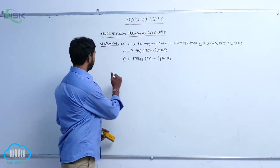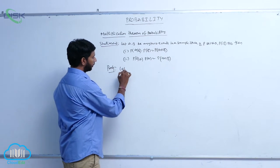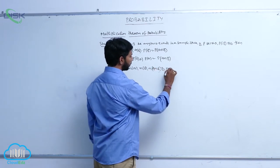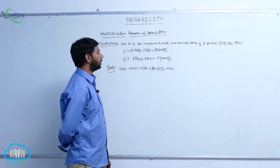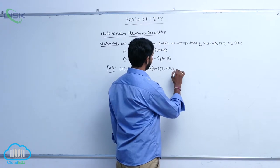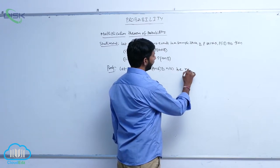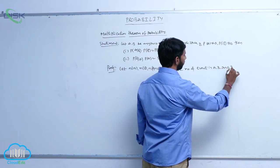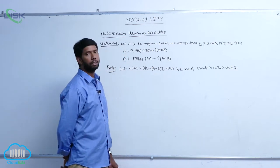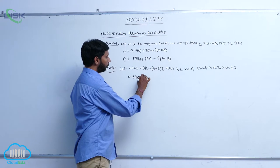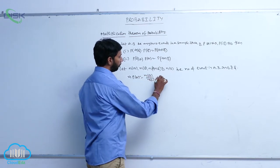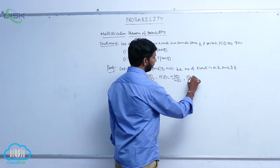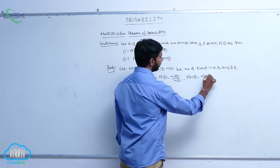Proof: Let N of A, N of B, N of A intersection B, and N of S represent the number of events in A, B, A intersection B, and S respectively. That implies P of A is equal to N of A by N of S, P of B is equal to N of B by N of S, and P of A intersection B is equal to N of A intersection B by N of S.